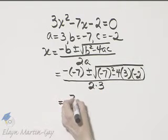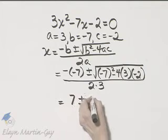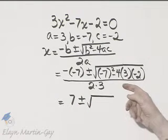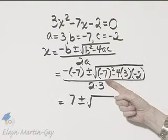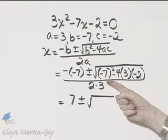So this is 7 plus or minus the square root of, now if you need to, go off to the side and work this in a few more steps than I'm going to work it, but negative 7 times negative 7, that is 49.